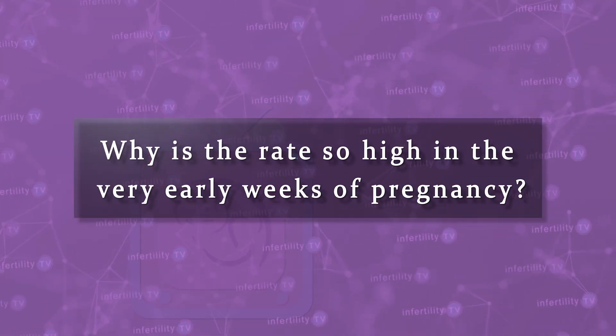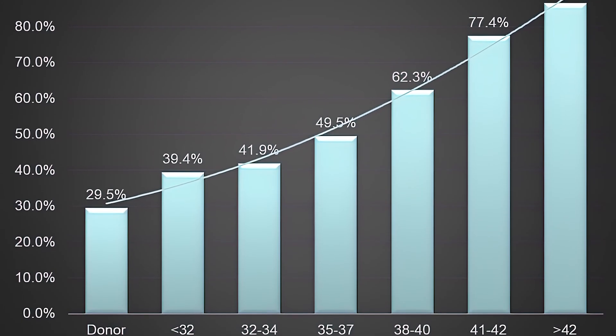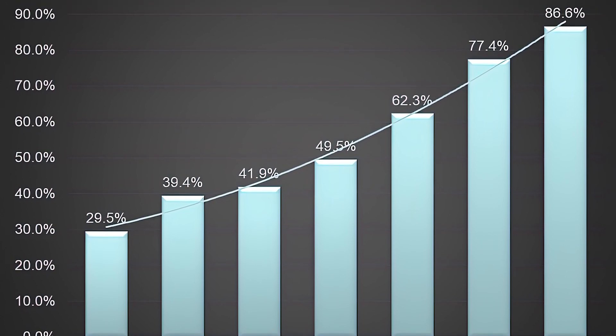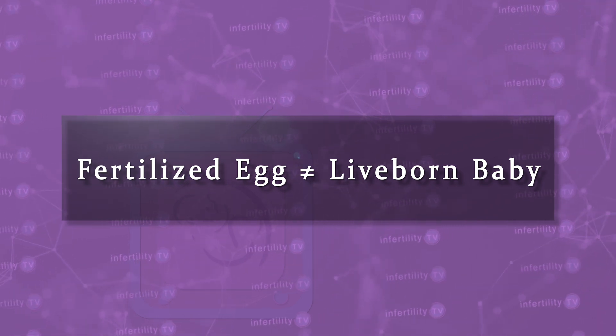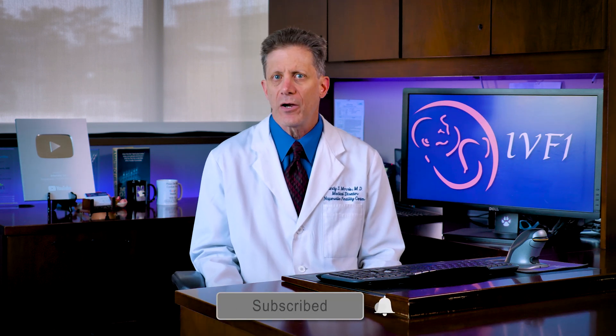Why is the rate so high in the very early weeks of pregnancy? Abnormal embryos. Human beings produce a tremendously high percentage of abnormal embryos. Stated another way, each fertilized egg has only a small chance of ending up as a live-born baby. As a reproductive endocrinologist, I provide care to people with infertility and people who are suffering from miscarriages. A common misconception I hear from patients who have had multiple miscarriages is that they believe that something is happening at a certain week of pregnancy. This is not actually what is happening.